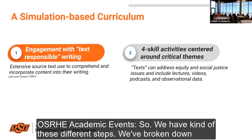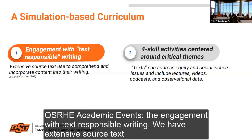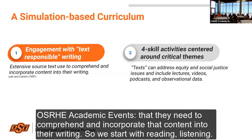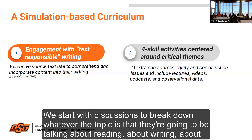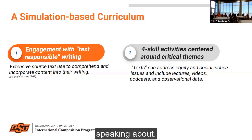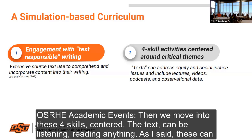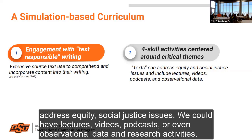We've broken down the engagement with text-responsible writing. We have extensive source texts that students need to comprehend and incorporate into their writing. We start with reading and listening, and discussion to break down whatever the topic is they're going to be talking about, reading about, writing about, and speaking about. Then we move into these four skill centers — the texts can be listening, reading, anything. These can address equity and social justice issues. We could have lectures, videos, podcasts, or even observational data and research activities.